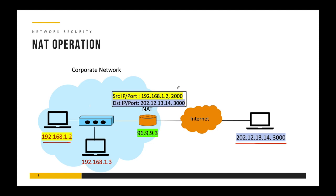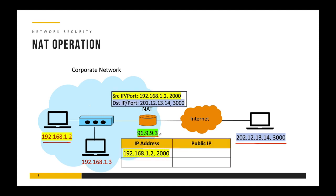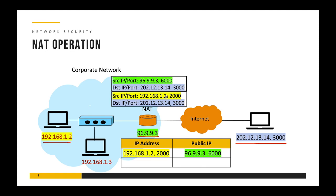An interesting thing happens when the packet arrives at the NAT router. The NAT router has a public IP address of 96.9.9.3, which is publicly routable. The NAT router maintains a table — it copies your source IP and port number, and notes that it will replace these with its own IP and a randomly generated port number, say 6000. So the NAT router crafts a new packet, replacing the original private IP address and port with its own publicly routable IP address and port, then sends this packet to the destination.